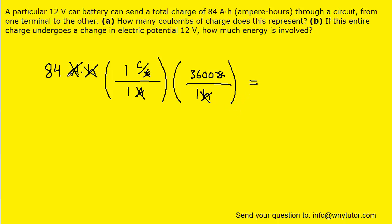And then all we have to do is pick up our calculators and multiply this out. And when we do that, we get roughly 3.0 times 10 to the fifth coulombs. So this is the correct answer to part A.